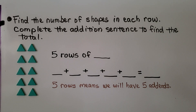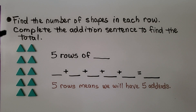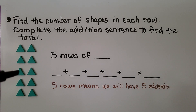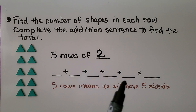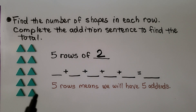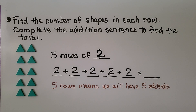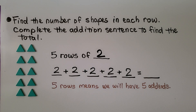It's telling us to find the number of shapes in each row and complete the addition sentence to find the total. We have 5 rows, and there are 2 in each row. We have 5 rows of 2. Because there are 5 rows, we will have 5 addends. And there's 2 in each row, so each addend will be a 2: 2 plus 2 plus 2 plus 2 plus 2. We could add these quickly by skip counting by 2s: 2, 4, 6, 8, 10. So 5 rows of 2 is equal to 10.